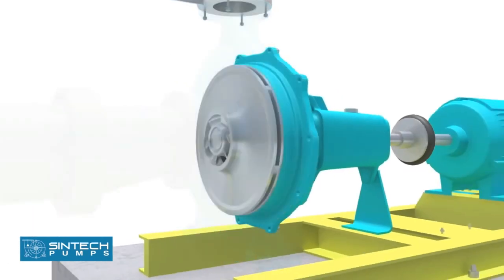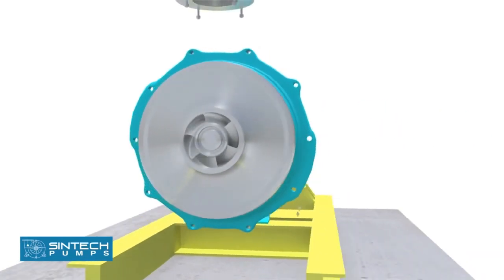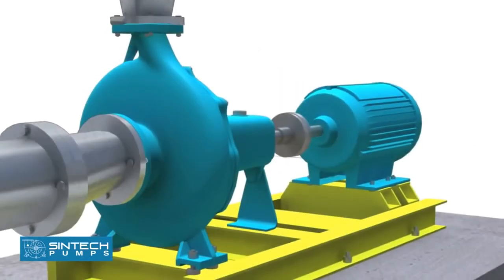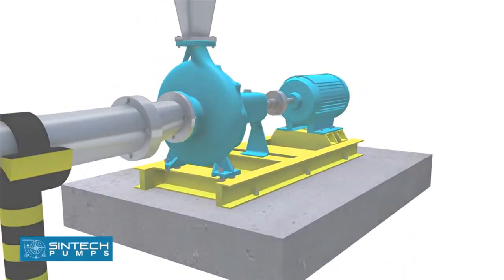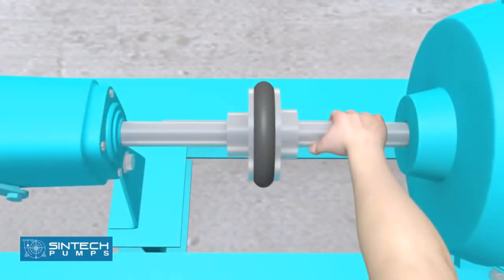The motor should be wired correctly to ensure the correct direction of rotation. This check has to be carried out before the pump is coupled. Once the pump and motor have been coupled, test the movement manually by rotating it by hand to see if it is rotating smoothly.